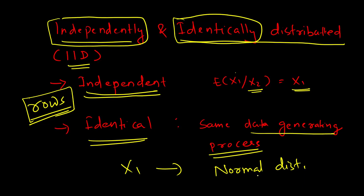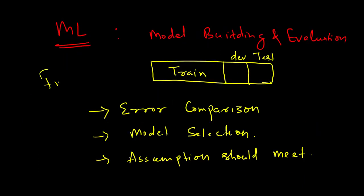Many times we overlook this assumption and go ahead with building models without trying to see whether this IID assumption is actually fulfilled or not. From a prediction point of view, how does violation of this assumption impact prediction? That's the intention of most machine learning models — they are least bothered about statistical inference and are rather more intended for prediction. It actually affects things in some way.